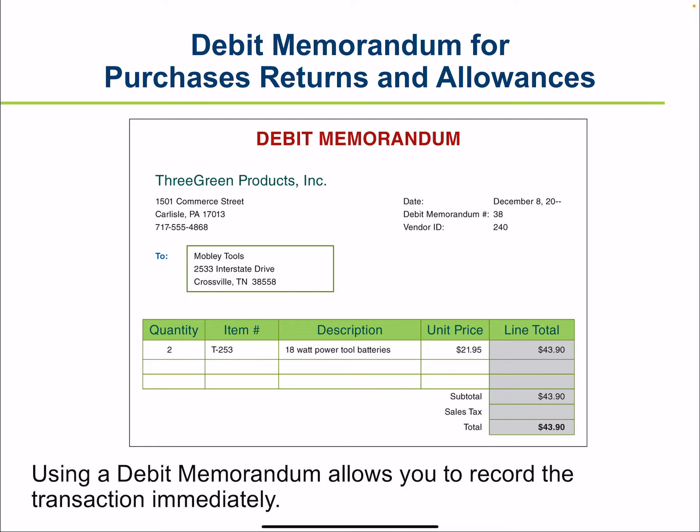The form is called a debit memorandum because the customer records the amount as a debit to the vendor's account, resulting in a decrease in the amount owed. The customer may use a debit memorandum as a source document for journalizing a purchase return or allowance, or may wait for written confirmation from the vendor. Three Green issues a debit memorandum for each purchase return or allowance, and these are used immediately as source documents without waiting for vendor confirmation. The original is sent to the vendor and Three Green files a copy.